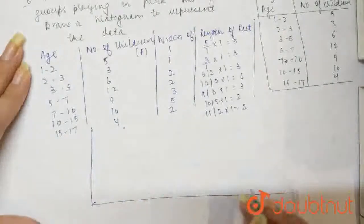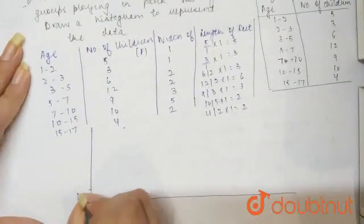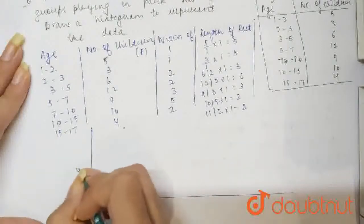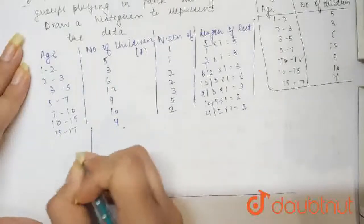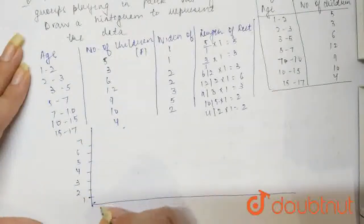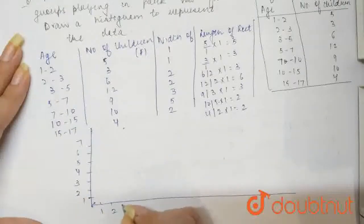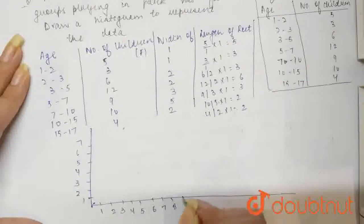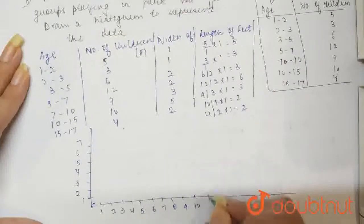So here, let us have this 1, 2, 3, 4, 5 and here 6 and 7. Right, and then we will have here 0, 1, 2, 3, 4, 5, 6, 7, 8. Do it up to say 17.